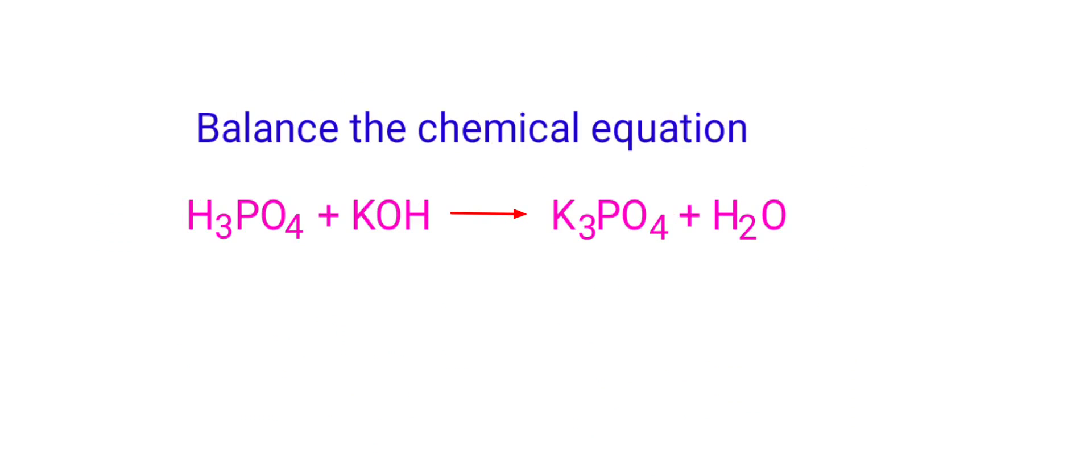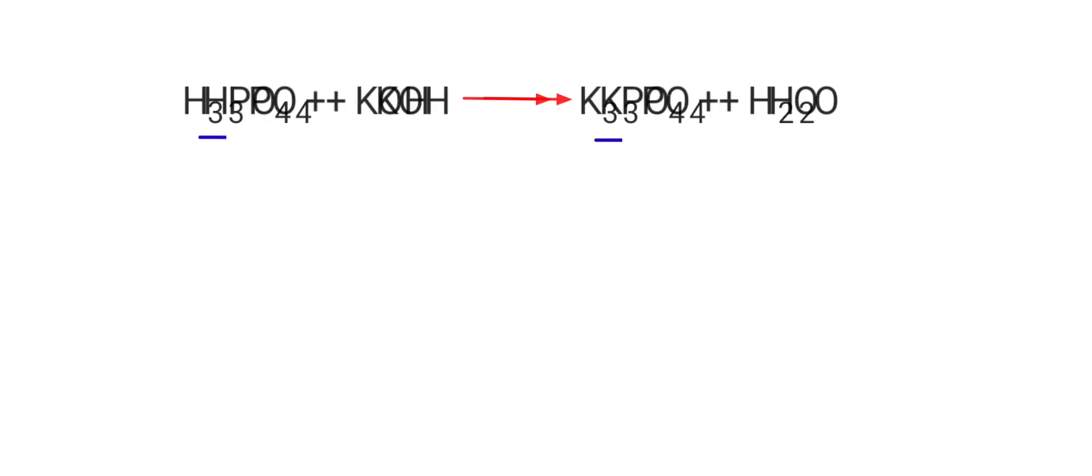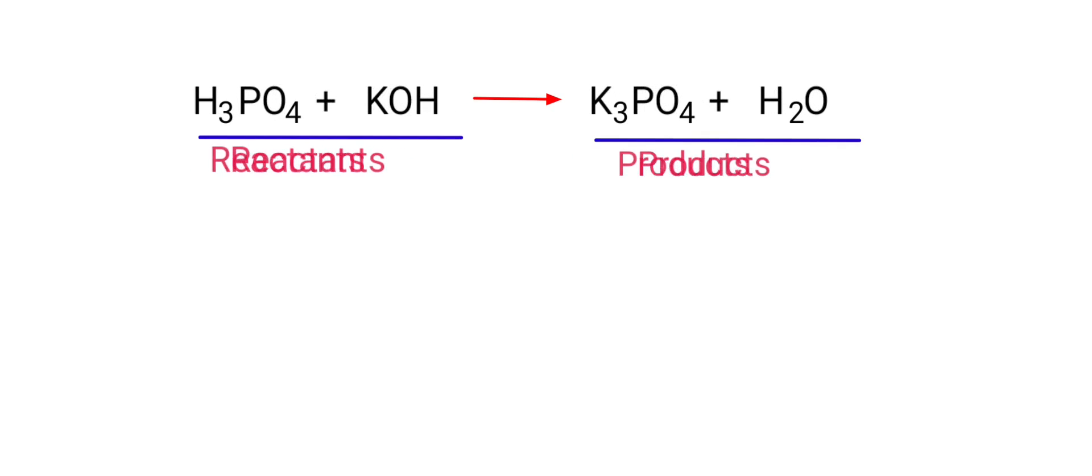Balance the chemical equation. Phosphoric acid plus potassium hydroxide gives us potassium phosphate plus water. In this equation, the reactants are phosphoric acid and potassium hydroxide, and the products are potassium phosphate and water.